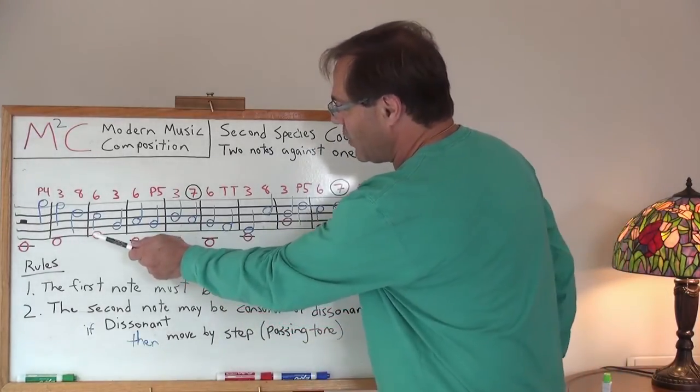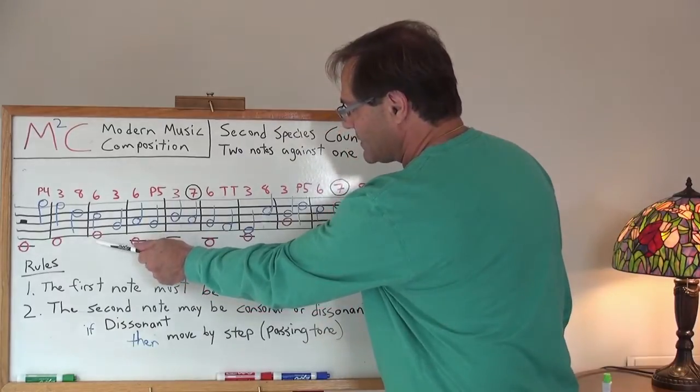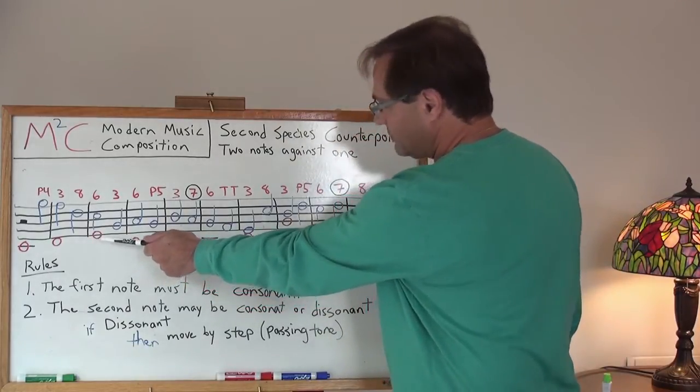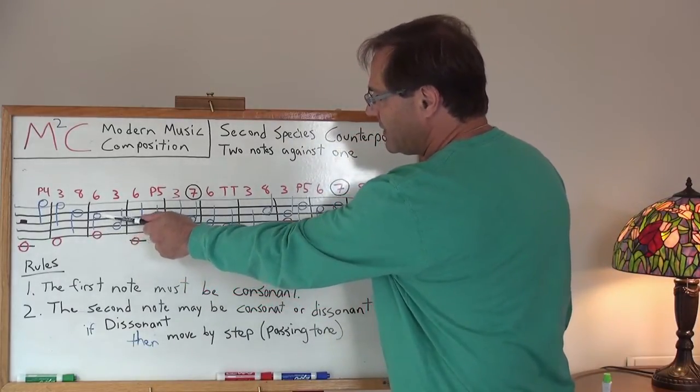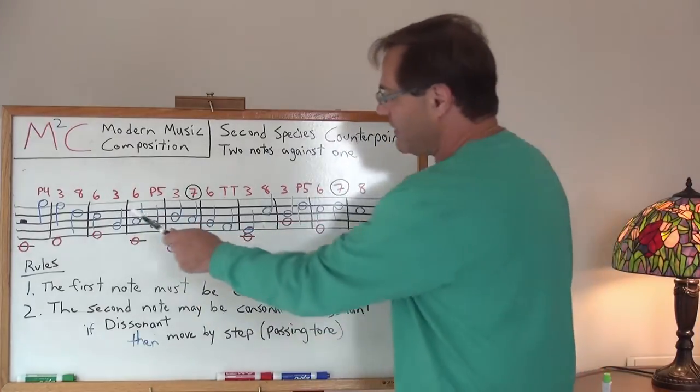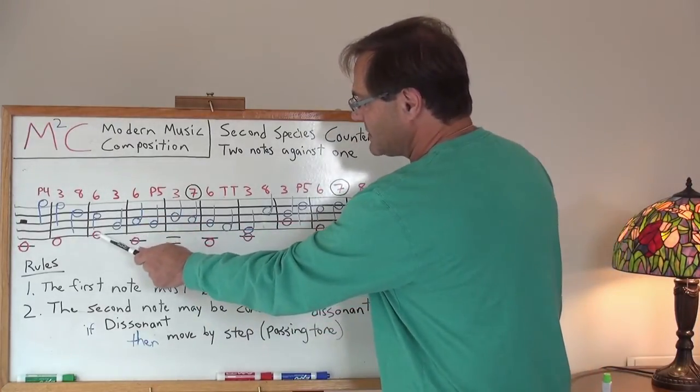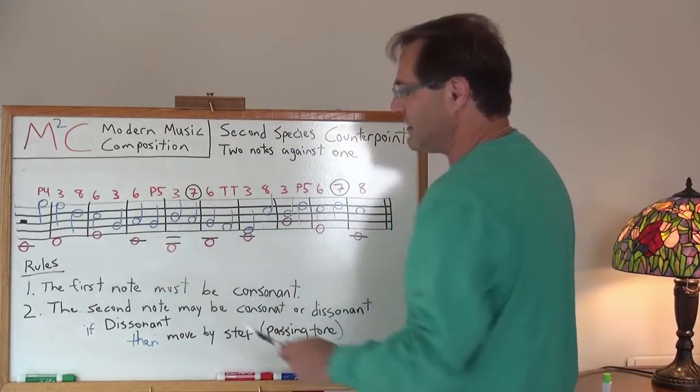Okay. Then I go and I've got in my Cantus firmus, I have an E. I take that E and I build a C. That's a sixth. And then I've decided to keep things consonant and I'll take that E against a G.